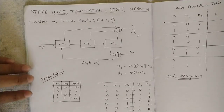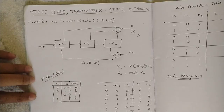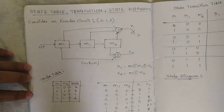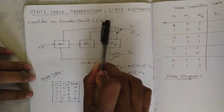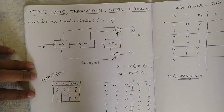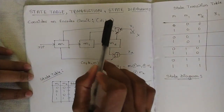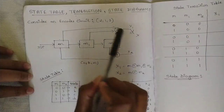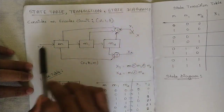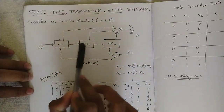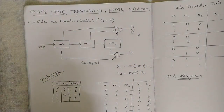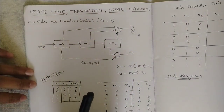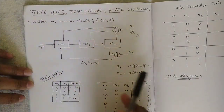For this you should consider one simple encoder circuit of the order (n, k, m) as (2, 1, 3). This indicates there are 2 modulo-2 adders, 1 message bit at a time, and 3 flip-flops or shift registers. Based on this order we have drawn this circuit here.